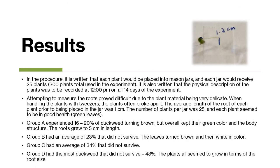In the procedure, each plant was placed into mason jars and each jar received 25 plants. The physical description of the plants was recorded at noon on all 14 days of the experiment. Attempting to measure the roots proved more difficult than expected because the plant material was very delicate, and when handling the plants with tweezers they often broke apart. The average root length of each plant prior to being placed in the jar was one centimeter, the number of plants per jar was 25, and each plant seemed to be in good health.